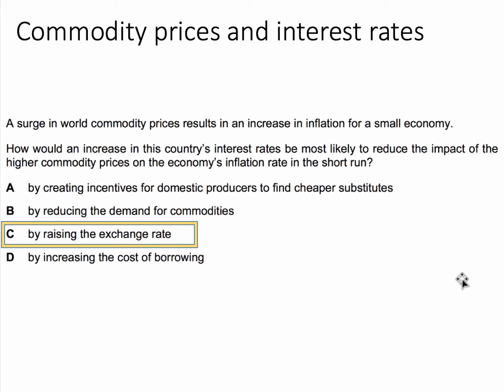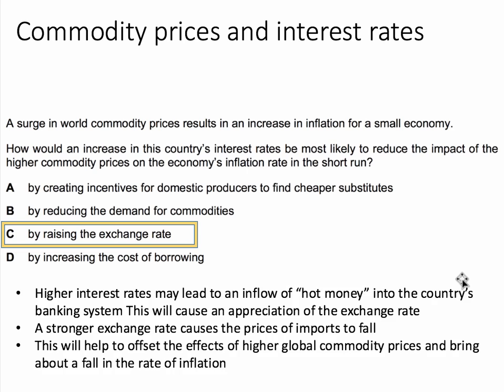We're told there's been a surge in commodity prices, so this country will presumably be a net importer of commodities that become more expensive, adding directly in the short term to inflation. So we're looking for an offsetting factor.